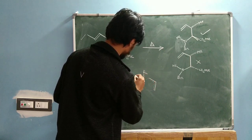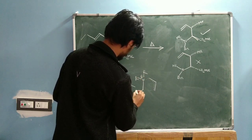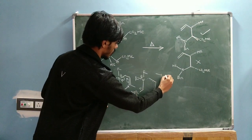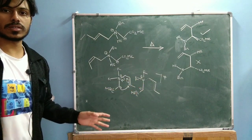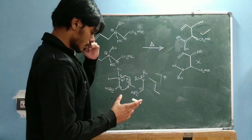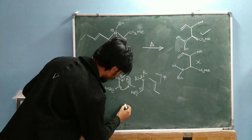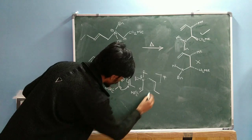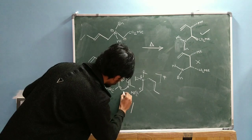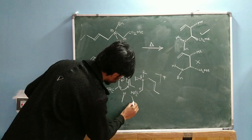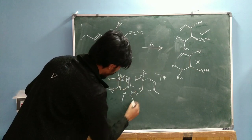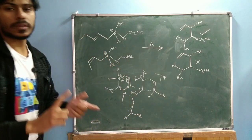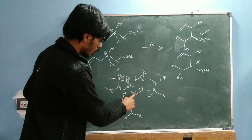We can represent the transition state like this: here you have the R groups, here the ester starred group, and here the methyl group. This is the transition state of the reaction. Since there is no manifestation of stereochemistry in this flat representation, we have to draw it in 3D. You first write down the dotted bond, make this bond above, connect the nitrogen group, and then put the methyl group on the right-hand side and hydrogen on the left.